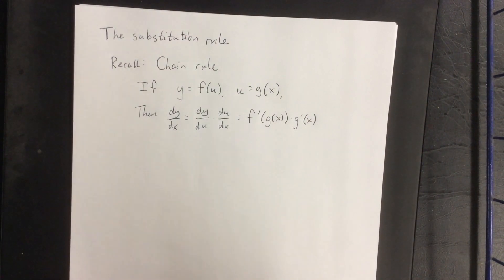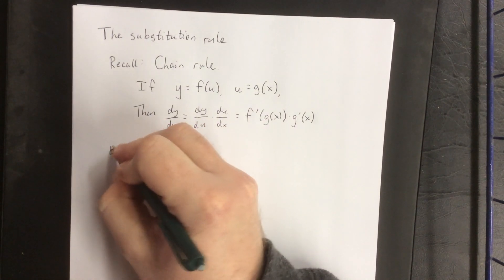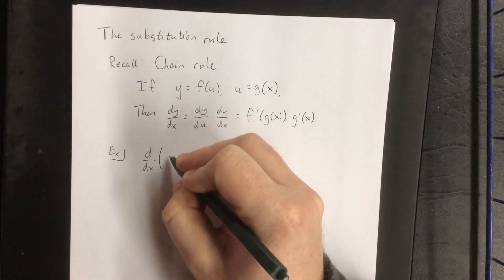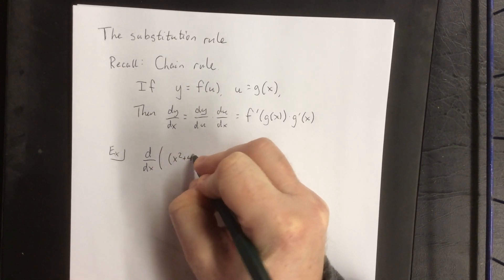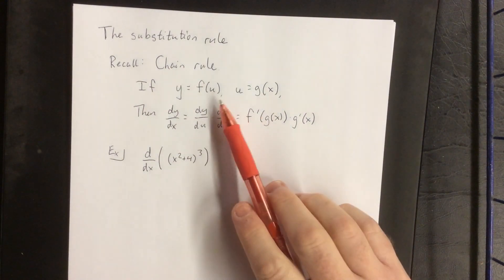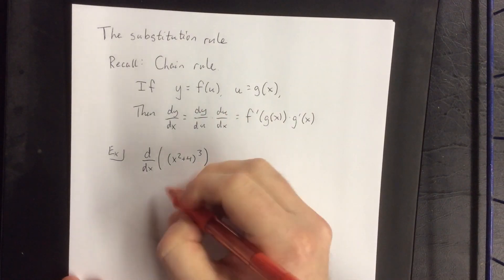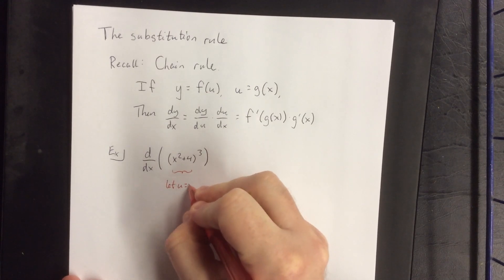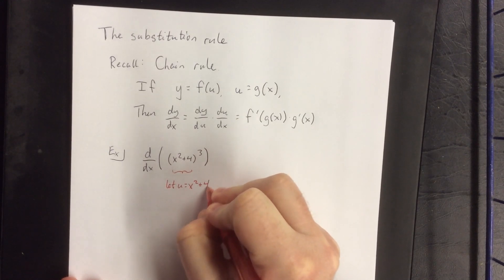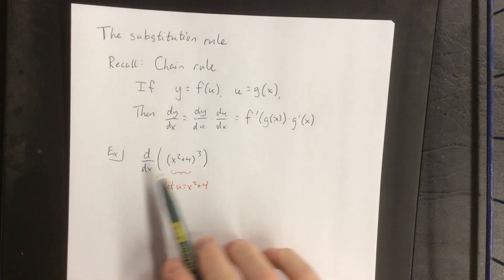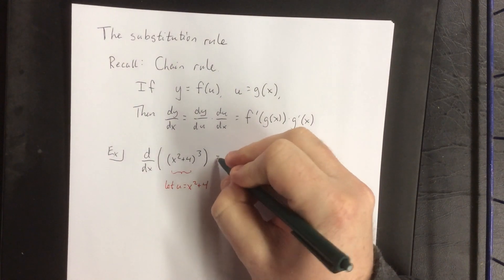An example of the chain rule would be the following. Differentiate with respect to x the quantity x squared plus 4, raised to the third power. One of the ideas in the chain rule is that you could refer to the inside function as u. With that in mind, we would then be differentiating the expression u cubed, which can be done using the power rule.